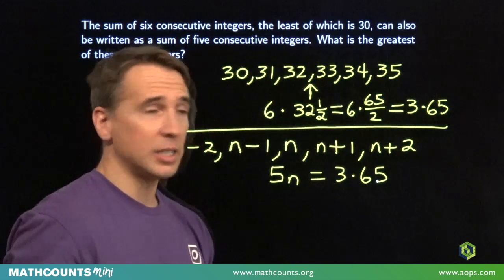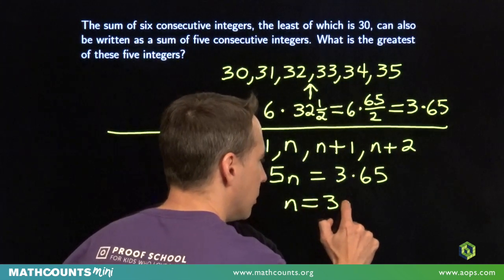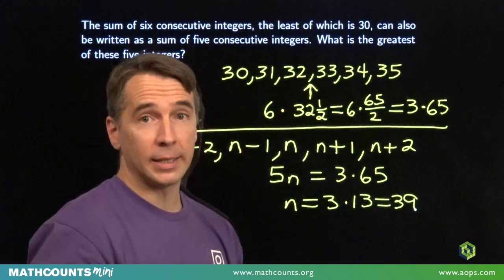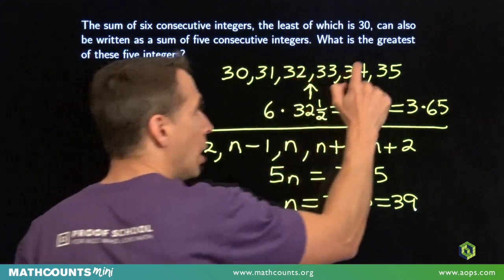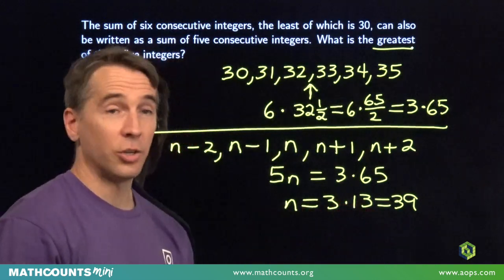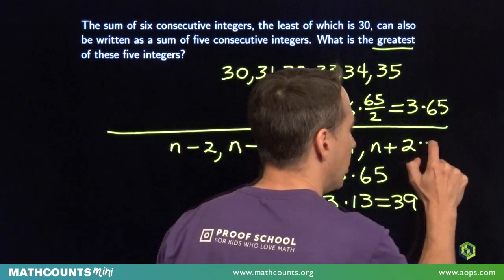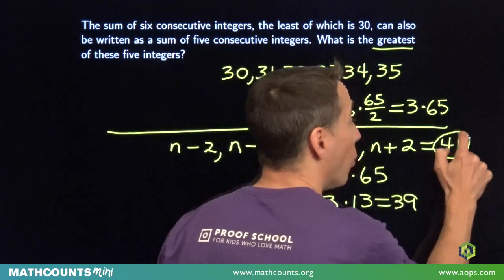I'm going to have five times n equals three times 65. Divide both sides by 5, n is 3 times 13, which you know is 39. Tempting to write that down and move on, but got to read the question. We're looking for the greatest of these five integers. n is 39. The greatest of these integers is n plus 2. 39 plus 2. The answer is 41.